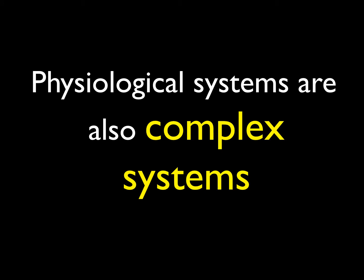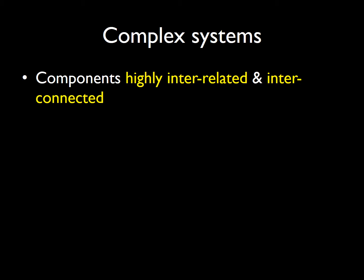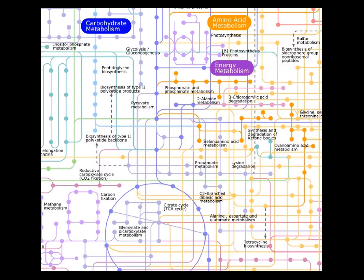Understanding that physiological systems are complicated, though, is not the same as recognizing that they are complex systems. Complex systems have particular properties which makes them particularly important for health and ill health. These systems are composed of components which are highly interrelated and interconnected. If we return to our example of metabolic pathways in cells, that isolated citric acid cycle is actually situated amongst a mass of other biochemical pathways. Some of its chemical components are actually shared with other pathways, so you can see how interrelated and interconnected these chemical components are within the complex cellular biochemical system.